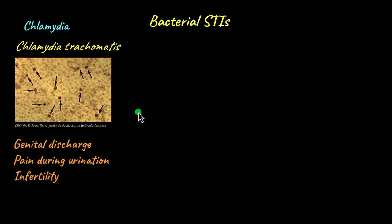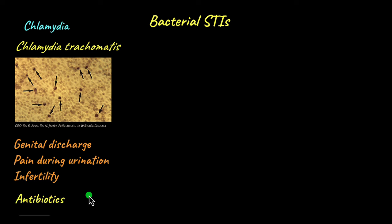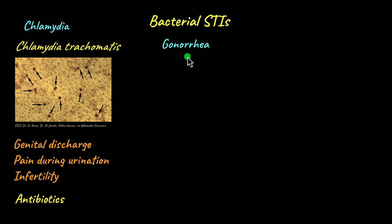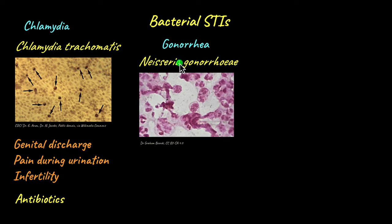If left untreated, chlamydia can cause infertility, especially in women, as it affects the pelvis causing pelvic inflammatory disease. Chlamydia can be treated with antibiotics and is 100% curable. Bacterial STDs are generally 100% curable with antibiotics, but viral infections are not. Another common bacterial STI is gonorrhea, caused by Neisseria gonorrhoeae.